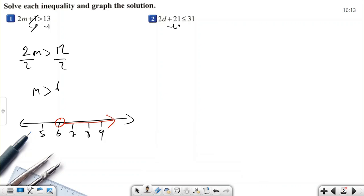Okay, this one is 2d plus 21. Here, if you add or subtract from both sides, it does not look like multiplication or division. The inequality sign will not change. 21 minus 21, this will be 0. So 2d less than or equal, 31 minus 21 is 10. Divided by 2. I'm dividing both sides by positive 2. So d is less than or equal to 5.